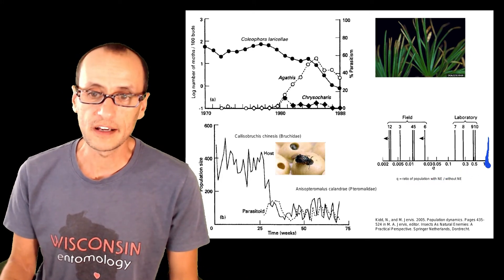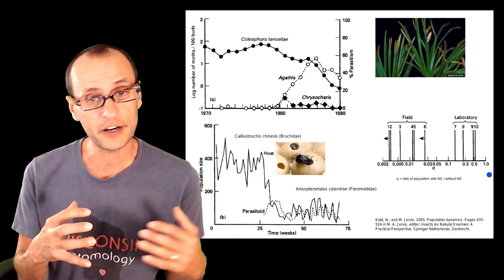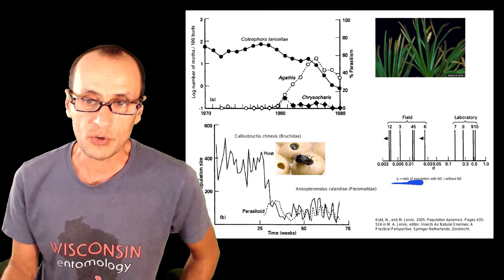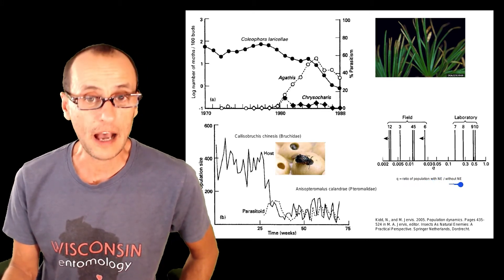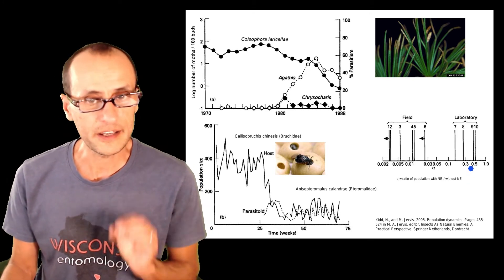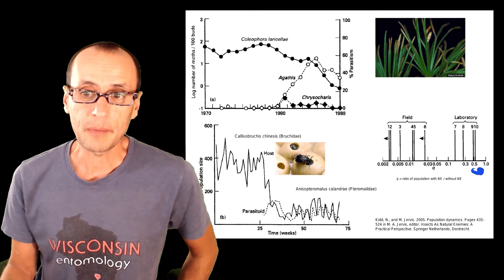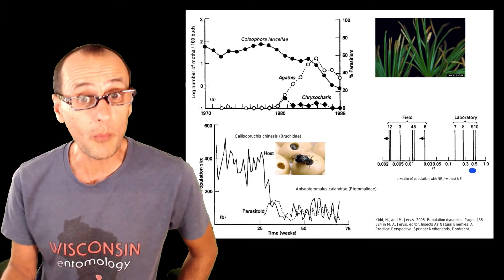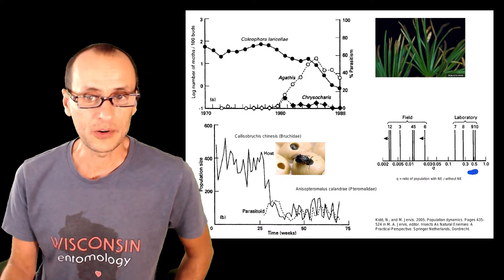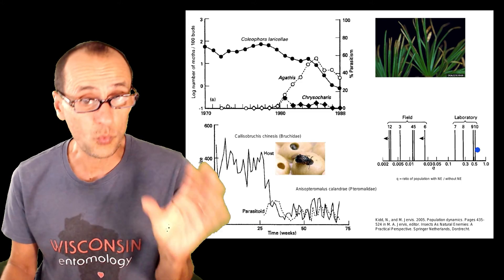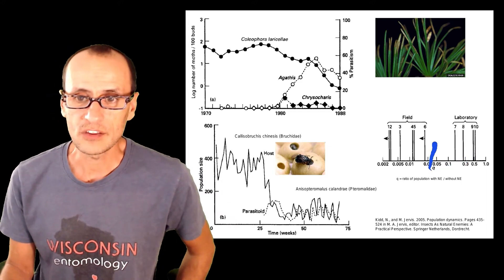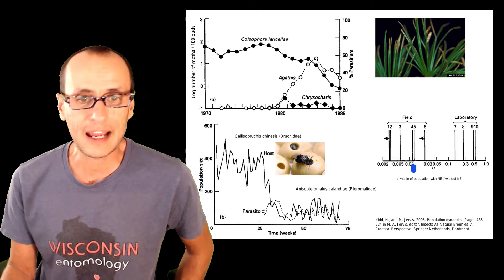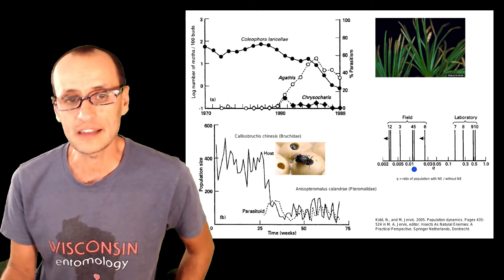Here's a summary of studies that looked at the relationship between the introduction of a predator and the consequences for prey. What you see is the ratio of population size with the natural enemy compared to without. For many successful biological control introductions, populations with the natural enemy — predators or parasites — are about half or more smaller than without them. In the field, some studies showed that populations with predators or parasitoids were as much as 99% lower than in the absence of those predators.